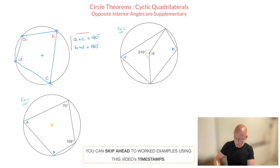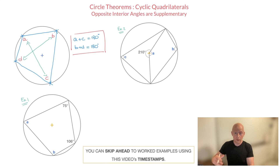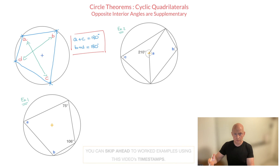I'll go ahead and write that on the side: A plus C equals 180 degrees, and B plus D equals 180 degrees. That's the rule you need to remember. And in an attempt to make things super clear, let me just add some arrows here — A and C are opposite angles, and so are B and D. That's the circle theorem you need to know about cyclic quadrilaterals and their opposite interior angles.